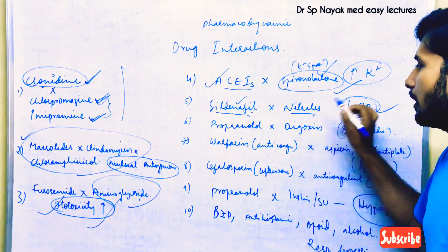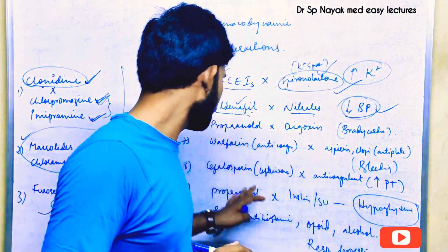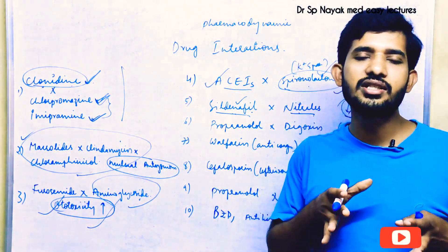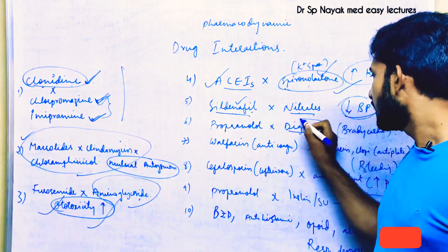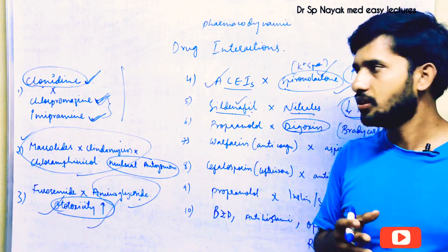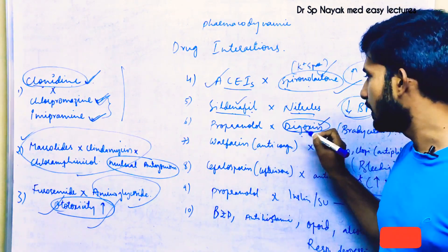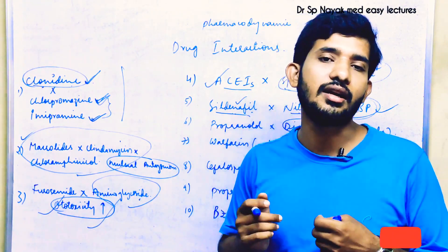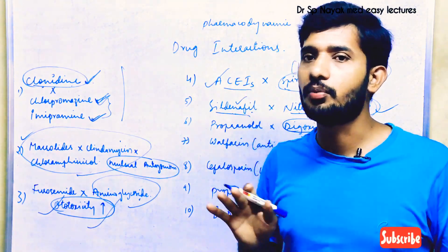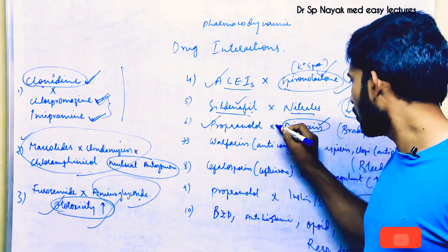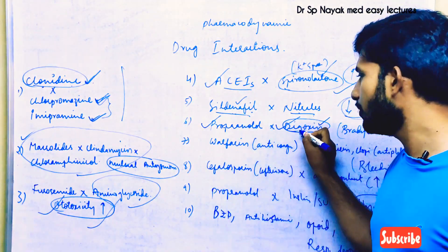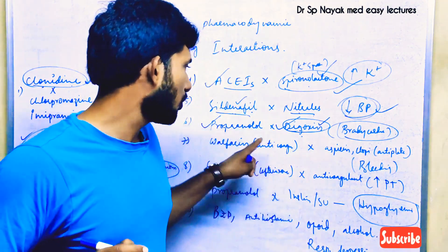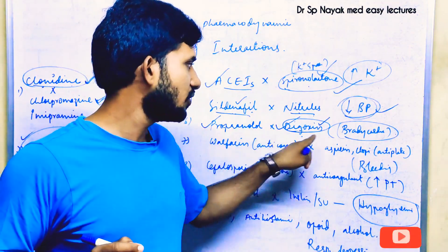Never combine sildenafil with nitrates. The next interaction is propranolol and digoxin. Propranolol is a beta blocker that reduces heart rate. Digoxin is a cardiac glycoside used in congestive cardiac failure — it increases the force of contraction but also reduces heart rate. Since both propranolol and digoxin reduce cardiac heart rate, their combination causes severe bradycardia. Never combine propranolol with digoxin.